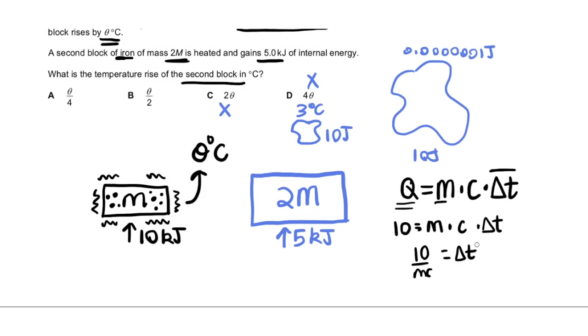Now the same thing applies to the second block, except that its energy is half. So it's Q upon 2, or 5, is equal to MC delta T. The M is 2M. So that's 5 upon 2MC is equal to delta T. Now let's compare these two equations.